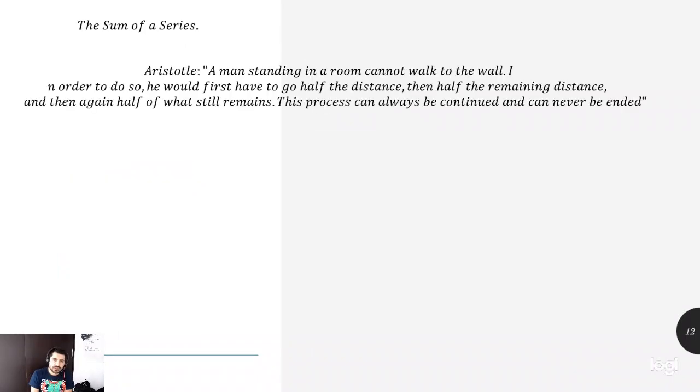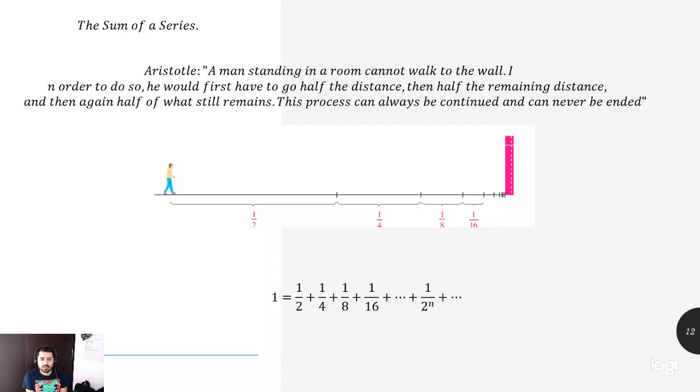Then, the sum of a series, we have this other paradox of Aristotle. A man standing in a room cannot walk to the wall. In order to do so, he would first have to go half the distance, then half the remaining distance, and then again half of what still remains. This process can always be continued and can never be ended. So we have one guy each time that this guy walks, walks half of the previous one. So each time is making progress lower and lower.